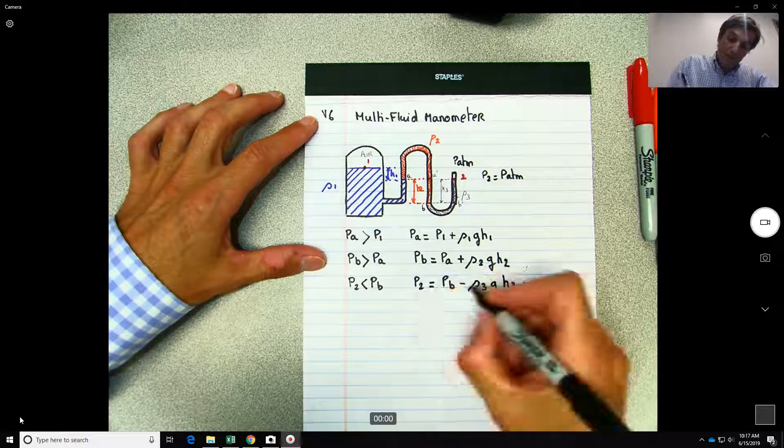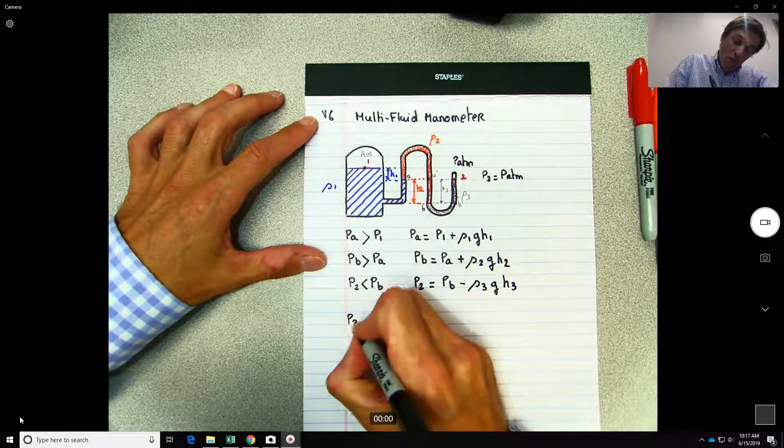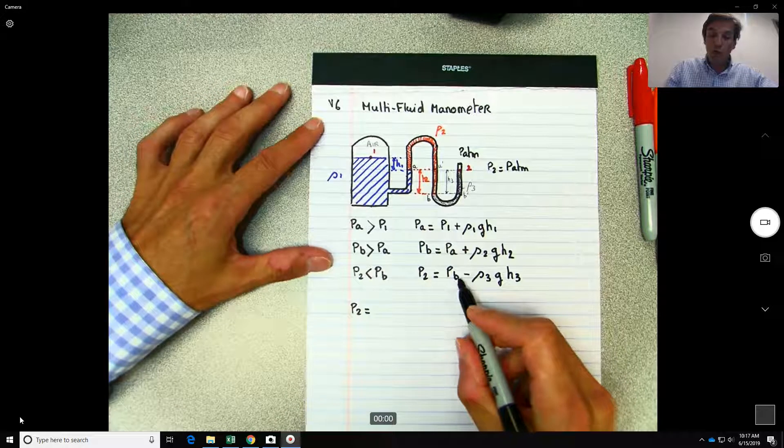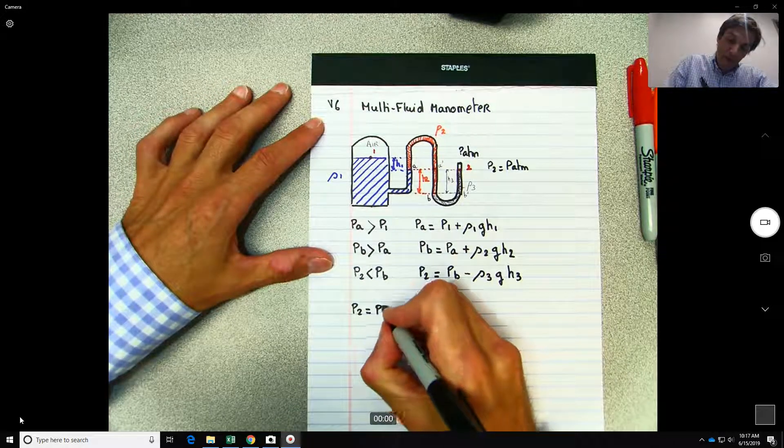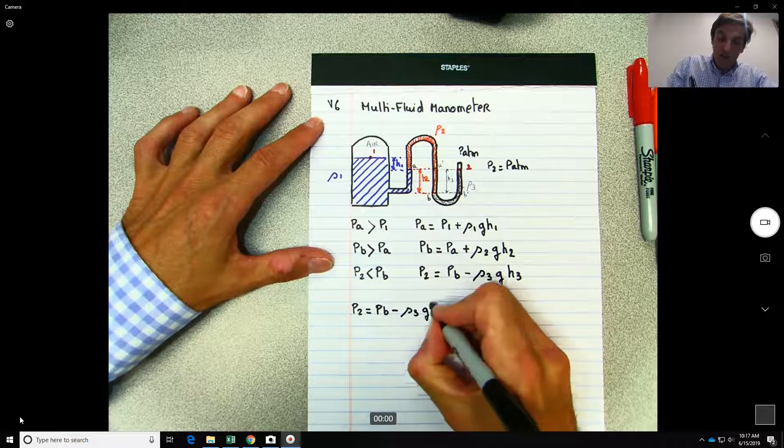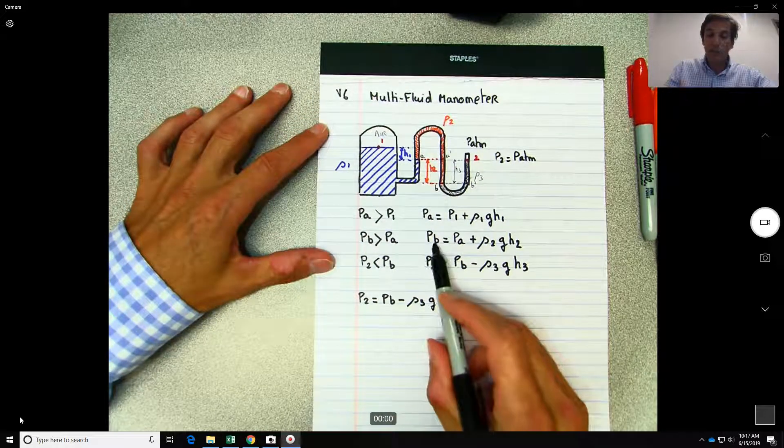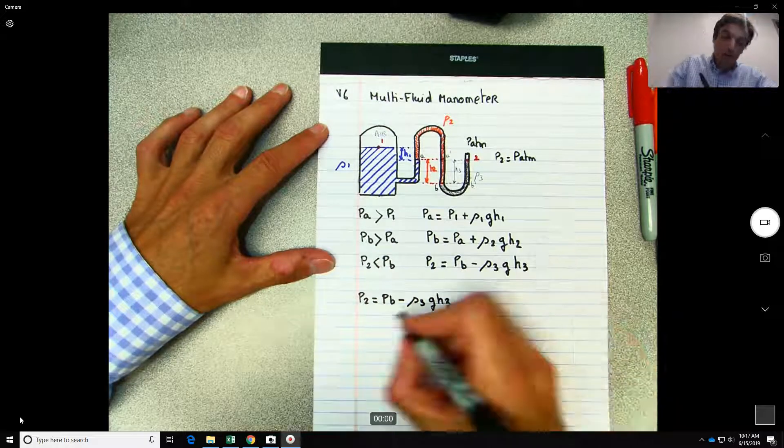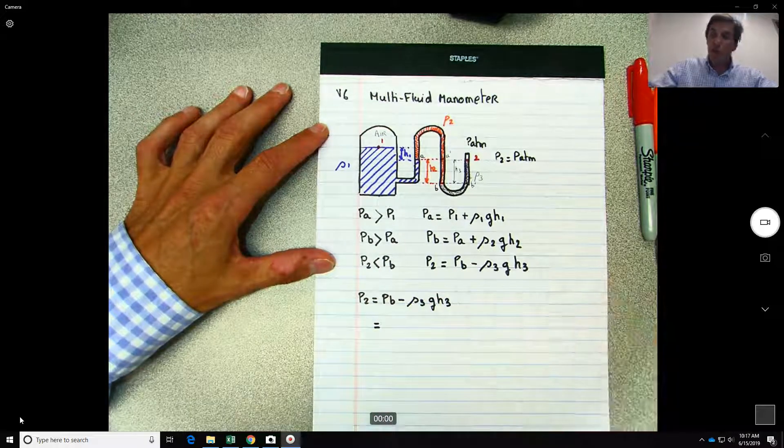So now if we combine those three equations, what do we have? P2 equals to PB minus rho 3 G h3. So what is PB?